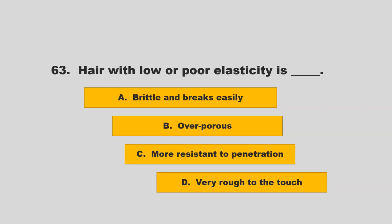Hair with low or poor elasticity is blank. Is it brittle and breaks easily, overporous, more resistant to penetration, or very rough to the touch? If you chose A, brittle and breaks easily, you are correct.